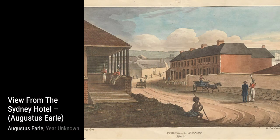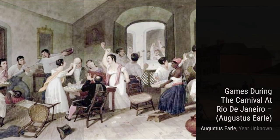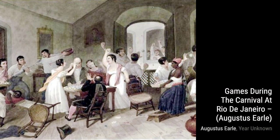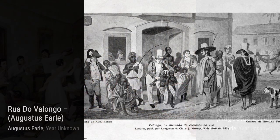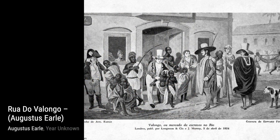Next, we have Divine Service as it is usually performed on board a British frigate at sea. Earl takes us on a journey aboard a British frigate, giving us a glimpse into the religious practices of sailors during their voyages.